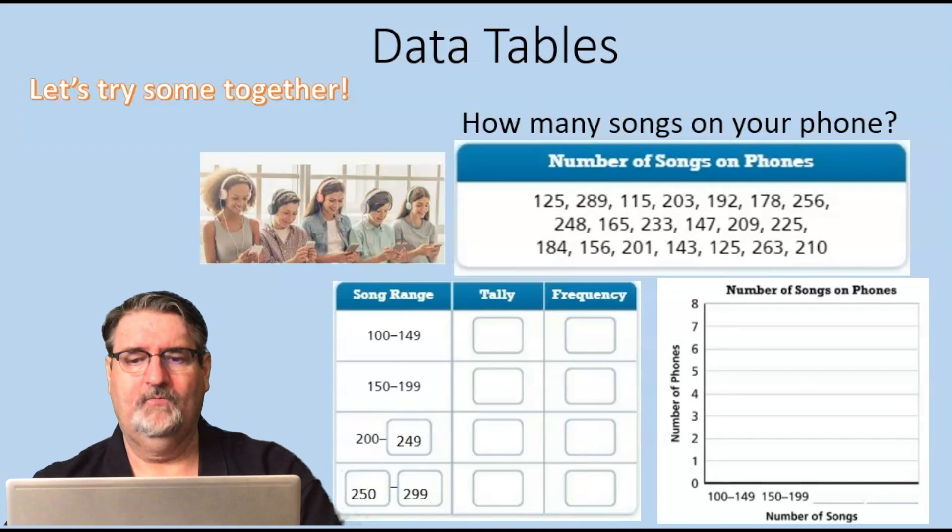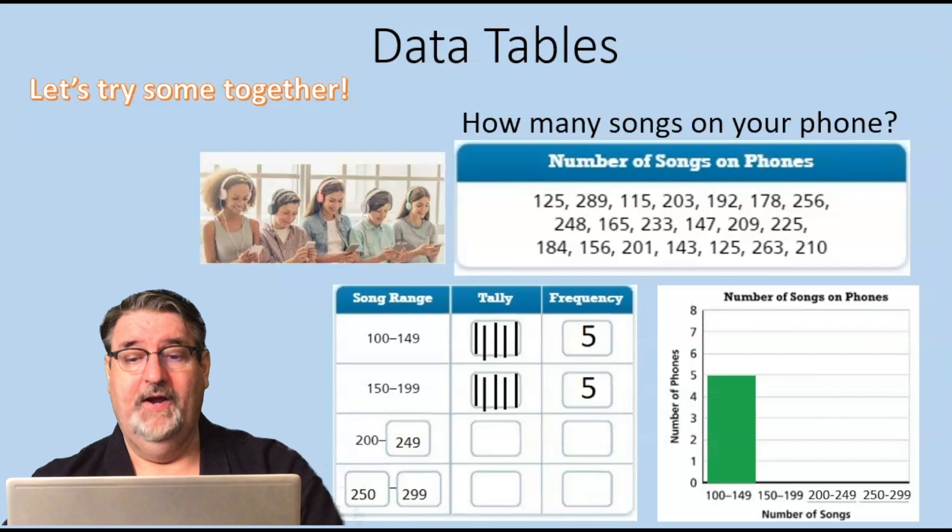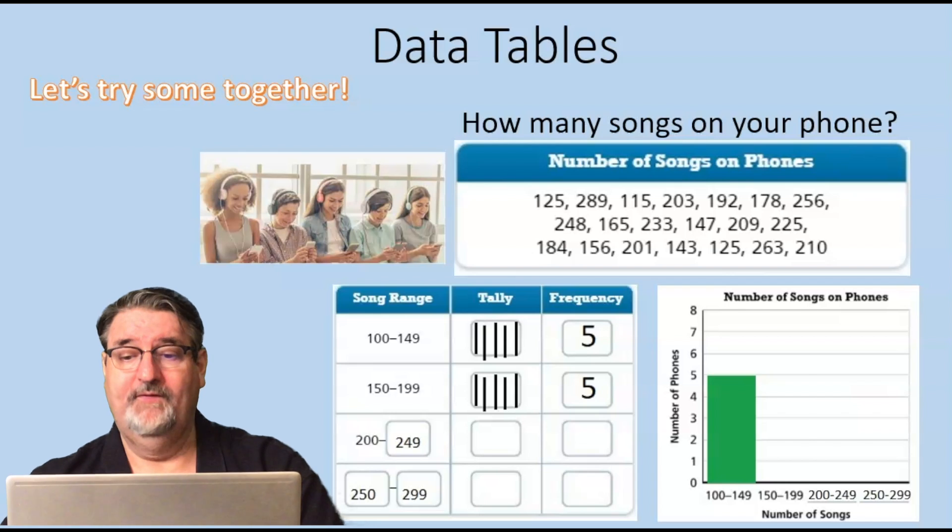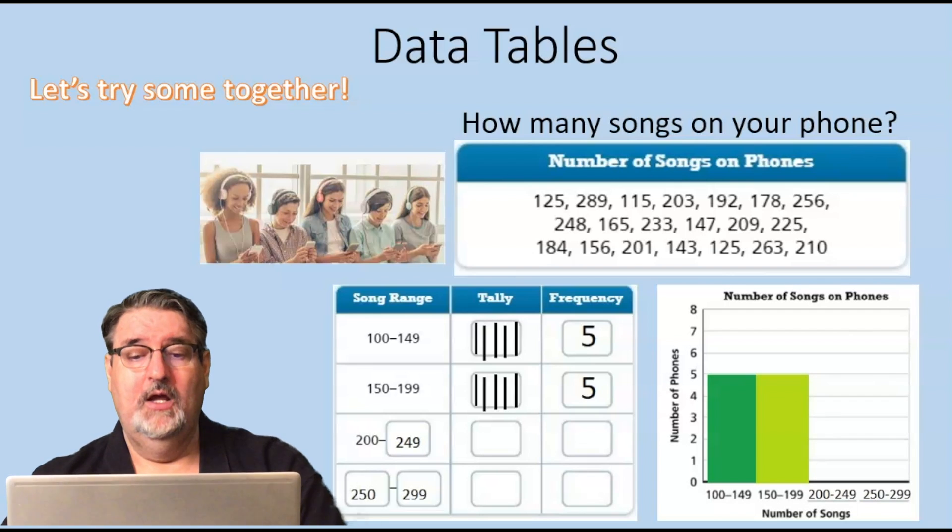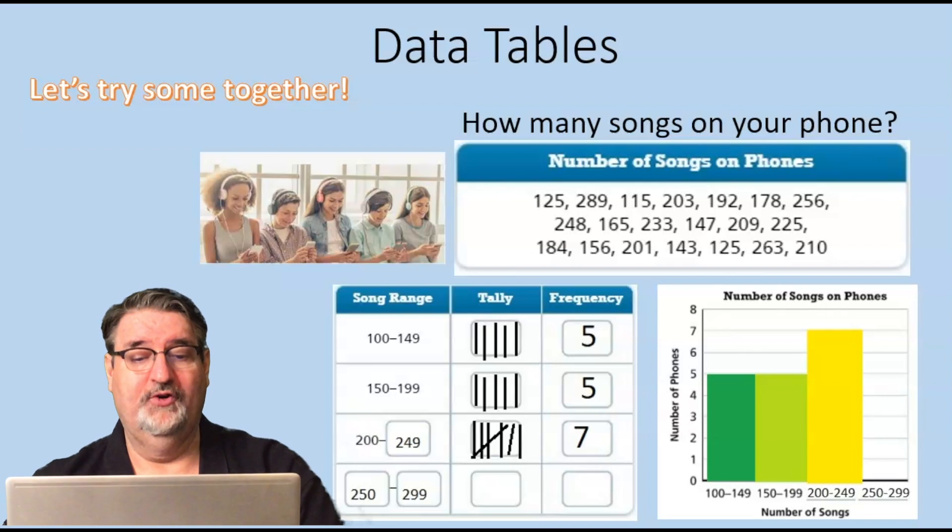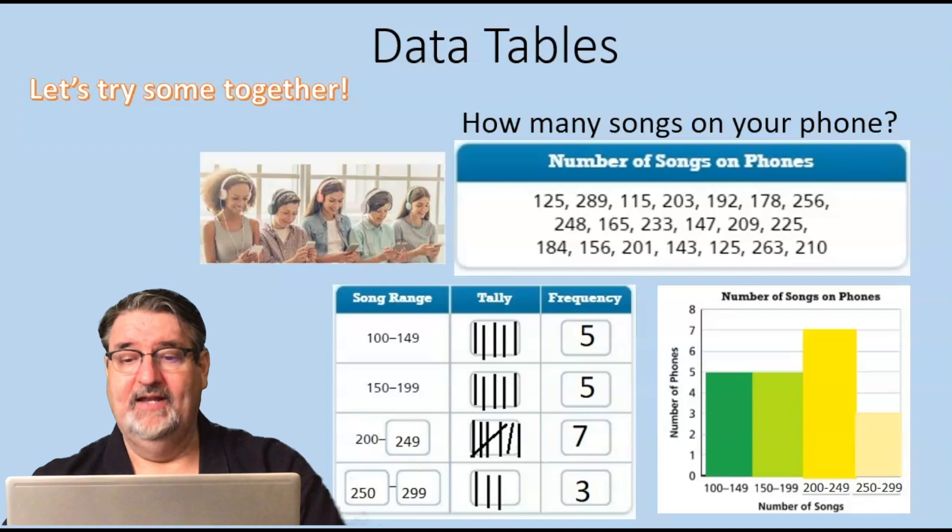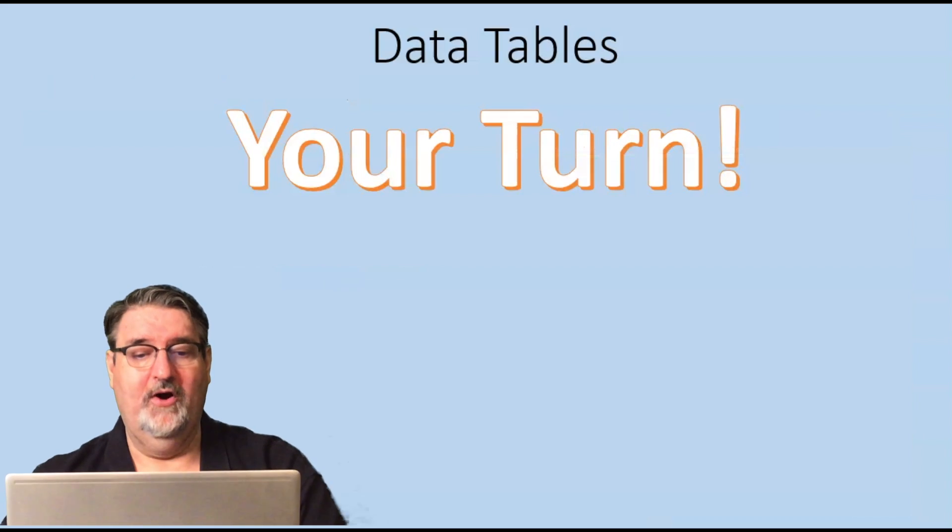Now let's come up with our tallies. There are five and so we write that down on frequency. For 150 to 199 there are five in that one. For the number of people that have 200 to 249 we came up with seven and we show that on our graph. And then finally people that have 250 to 299 songs there are three, and so we put that on our graph.